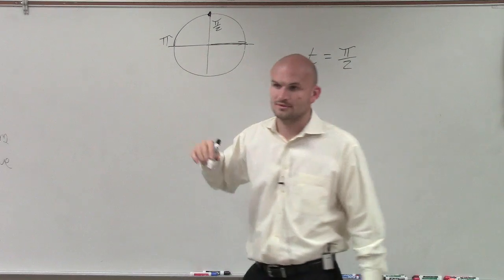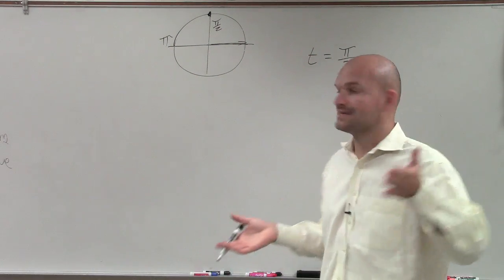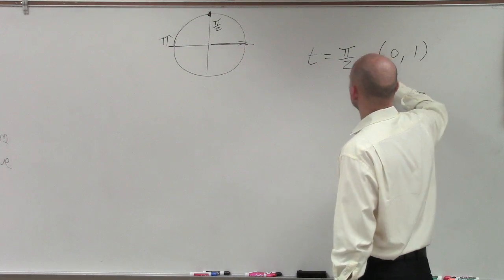So what is that point? Well, remember, the radius on the unit circle is 1, and it's on the y-axis. So therefore, my point is going to be 0 comma 1, right?